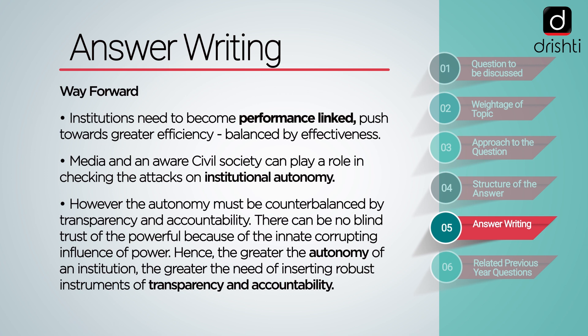Way forward: Institutions need to become performance-linked, pushed towards greater efficiency balanced by effectiveness. Media and an aware civil society can play a role in checking the attacks on institutional autonomy. However, the autonomy must be counterbalanced by transparency and accountability. There can be no blind trust of the powerful because of the innate corrupting influence of power. Hence, the greater the autonomy of an institution, the greater the need of inserting robust instruments of transparency and accountability.